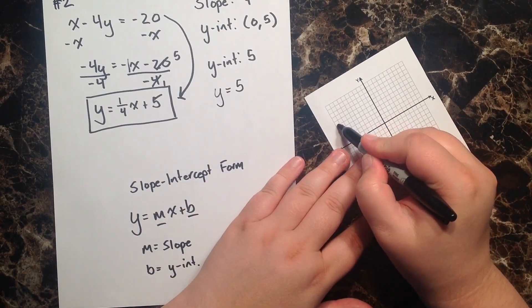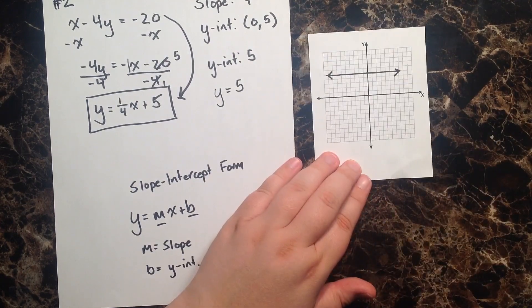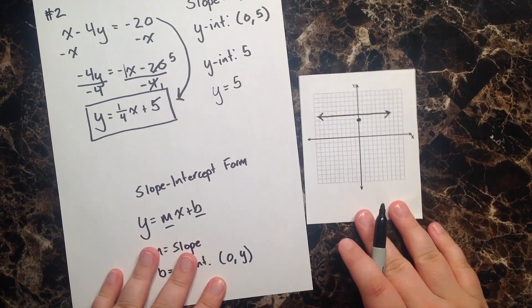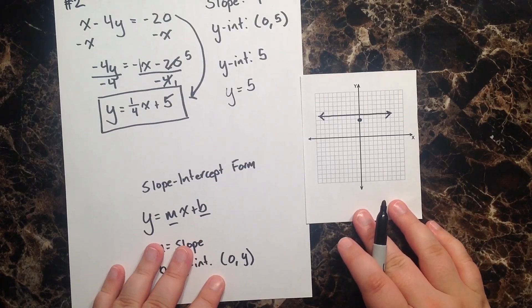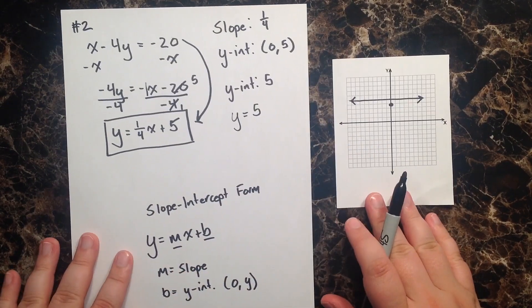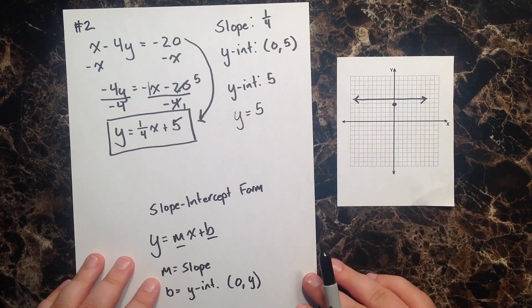Y equals 5 is this line right here, which is different than saying I just want a point at 0 comma 5. And so, just get into the habit when writing your intercepts, and again, really any point, that you have both an x-coordinate and a y-coordinate.